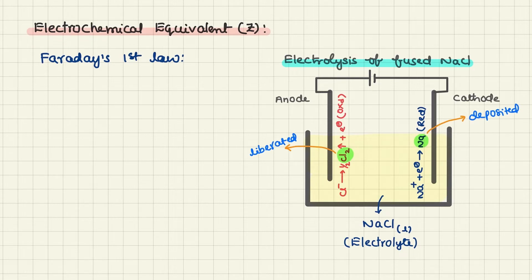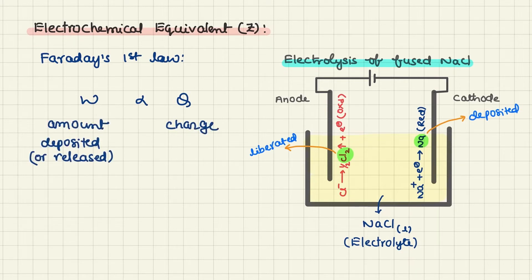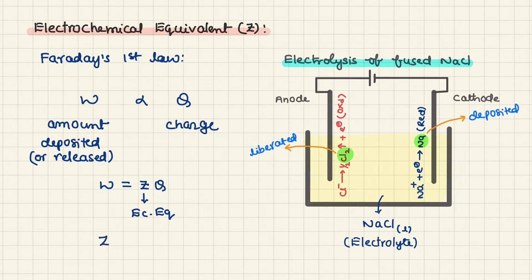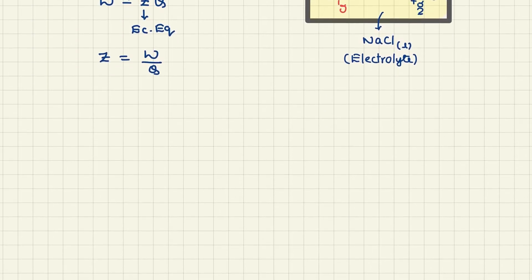That relation is given by Faraday's first law. As per Faraday's first law, the amount of substance deposited, W, is directly proportional to the charge supplied, Q. So W is equal to proportionality constant Z into Q. This Z is the electrochemical equivalent. The expression for Z is Z = W/Q. The definition of Z is: when one coulomb of charge is supplied, the deposited quantity of substance is Z.